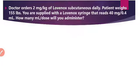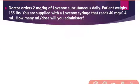Our next problem states that the doctor orders 2 mg per kg of Lovenox subcutaneous daily. The patient weight is 155 pounds, and you are supplied with a Lovenox syringe that contains 40 mg per 0.4 ml. How many ml per dose will you administer? Our desired amount is 2 mg per kg, and we need to convert the patient weight into kilograms.